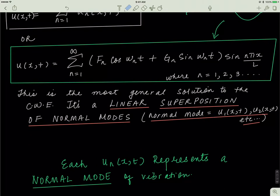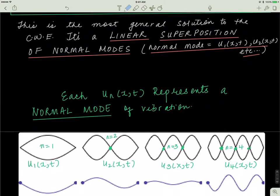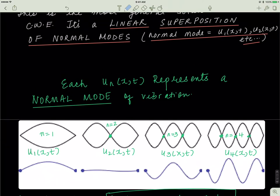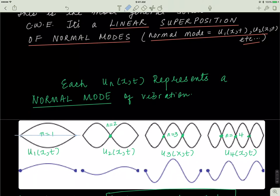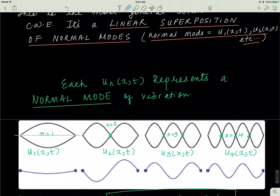So it turns out that each u_n(x,t) represents something called a normal mode of vibration. Basically, each u_n(x,t) represents a different standing wave. So these are the different types of standing waves you can have because of each u_n(x,t) term. So when you have u_1, basically when n is equal to 1, that was the example we set off with. A string that was tied on two ends and it went up and down, up and down, up and down like this.